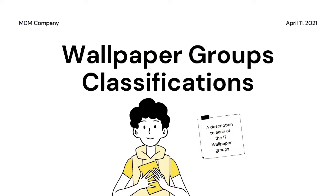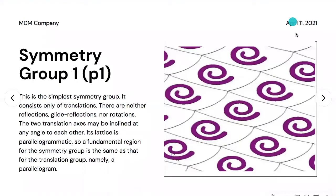We'll now be talking about the 17 classifications of wallpaper groups, with a brief description for each. Symmetry group one is named P1. This is the simplest symmetry group — it consists only of translations. There are neither reflections, glide reflections, nor rotations. The two translation axes may be inclined at any angle to each other, and its lattice is parallelogrammatic. A fundamental region for this group is a parallelogram. You may notice that the designs are relatively individual in each tile.